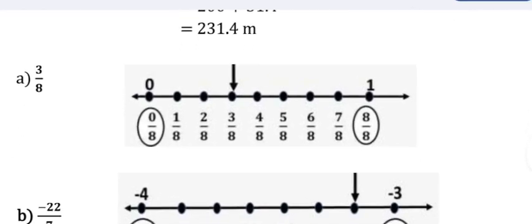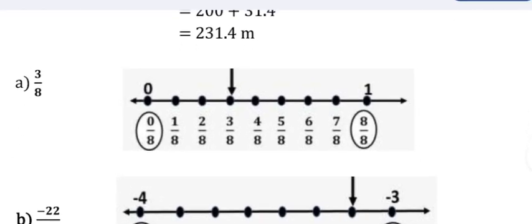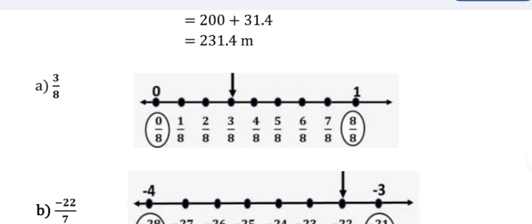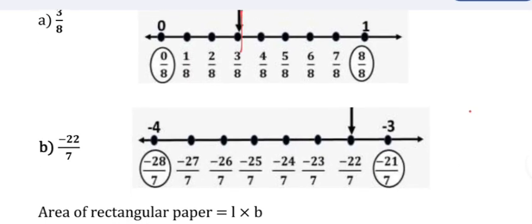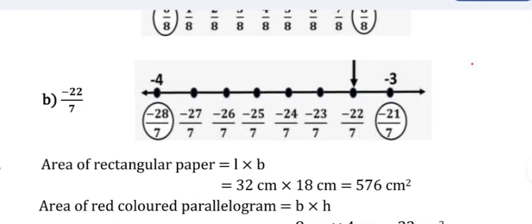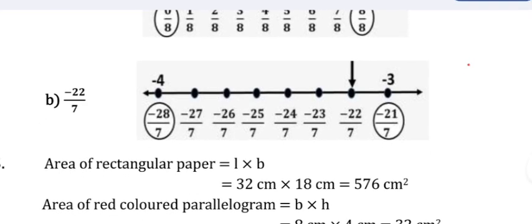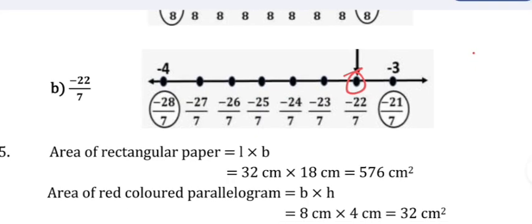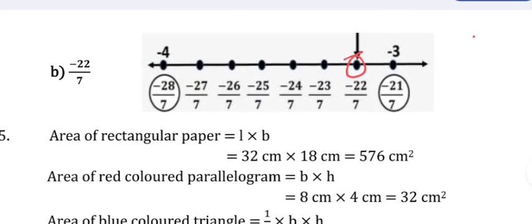Question 15 (Section C) solution: 3 by 8 is represented on a number line — shown with the appropriate position marked. Minus 22 by 7 is also represented on a number line — the arrow mark denotes minus 22 by 7.